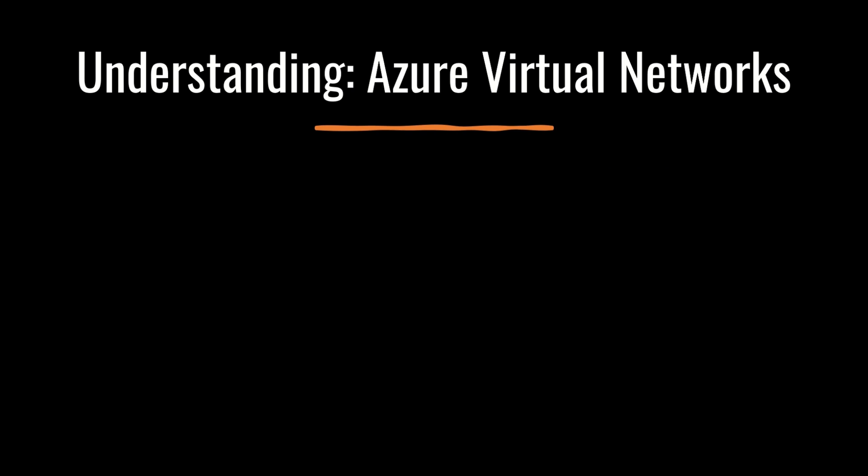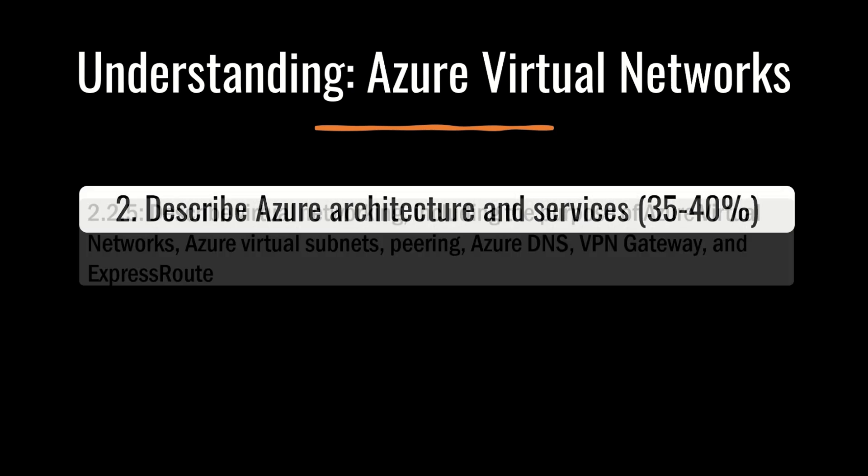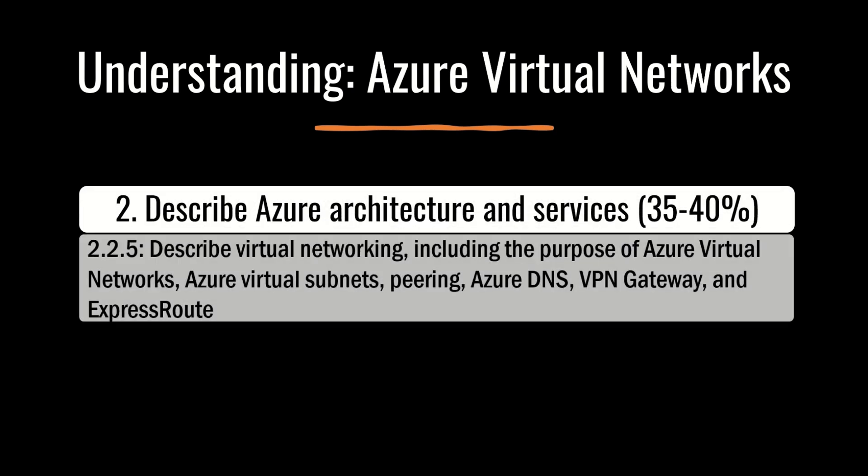Let's start by understanding what Microsoft has to say on virtual networks. Please note that this is the start of our section 2.2.5: Describe virtual networking, including the purpose of Azure virtual networks, Azure virtual subnets, peering, Azure DNS, VPN Gateway, and ExpressRoute.